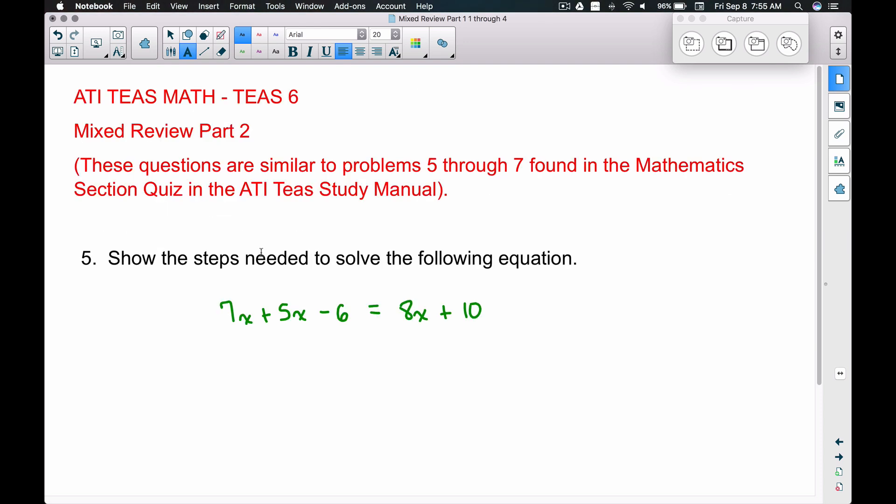So number 5, it says show the steps needed to solve the following equation. Sometimes on the TEAS test if you have to solve an equation it's not going to ask you for the answer. It's going to give you a couple of choices, multiple choice answers and you want to list the proper steps. Now there's definitely more than one way to do this but I'm going to go over the most common way for solving equations here.